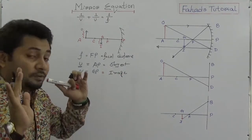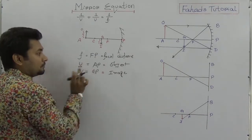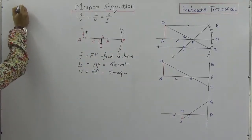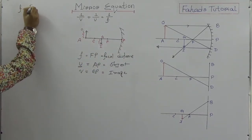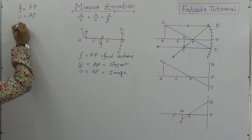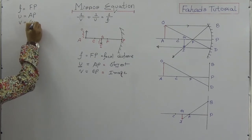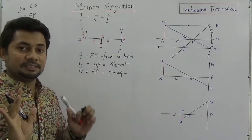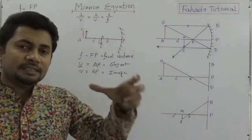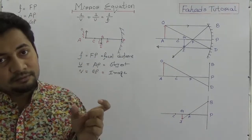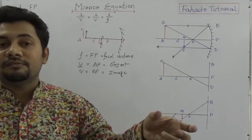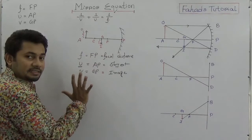So all distances are measured from the pole P. F is the focal distance FP, U is the object distance AP, and V is the image distance GP. This equation is applicable for any mirror or any lens — convex and concave mirror, and also convex and concave lens.